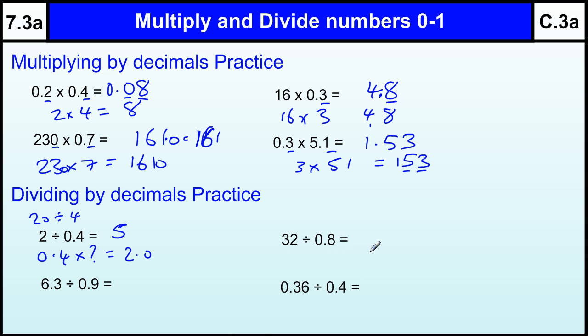8 is going to 32 four times, but our answer is going to be 10 times as big, because we're dividing by 0.8, so the answer is 40.